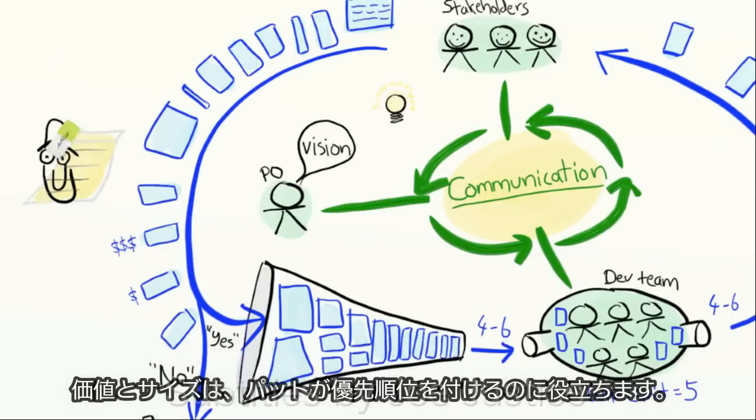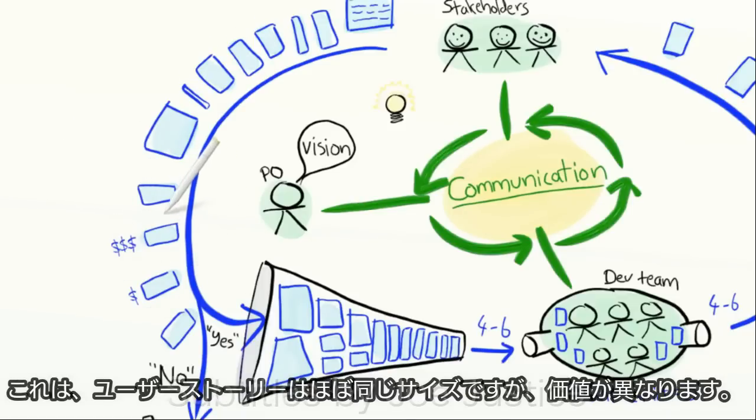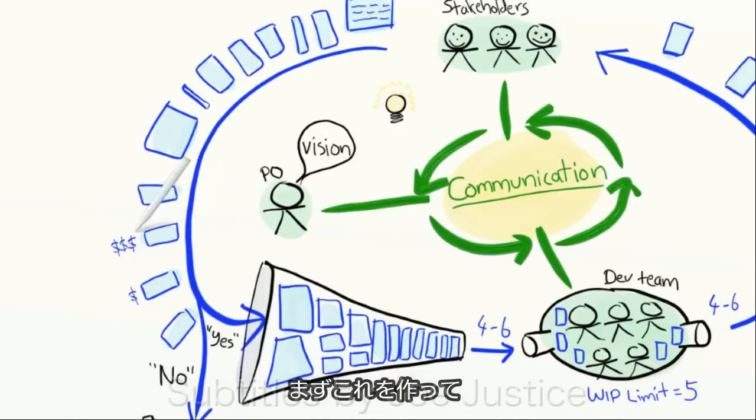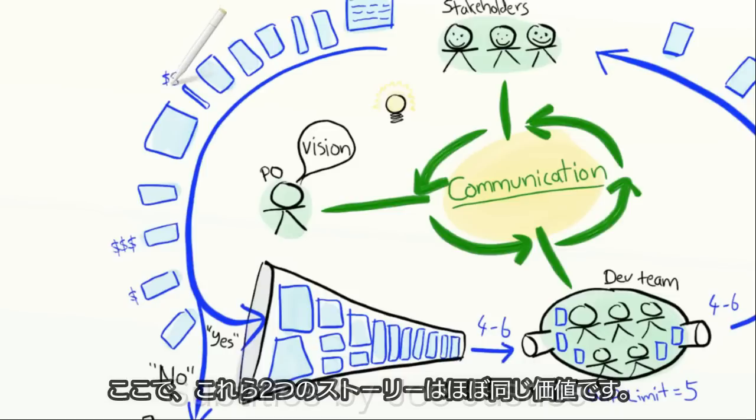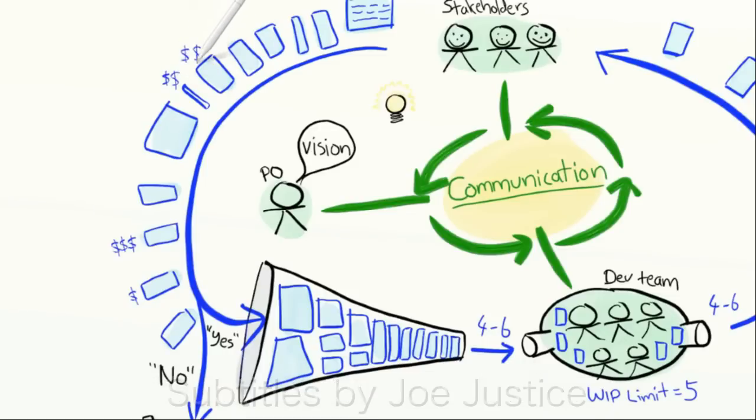Value and size is what helps Pat prioritize intelligently. Like here, these two stories are roughly the same size but have different value, so build this one first. And over here, these two stories have roughly the same value but different size, so build this one first. And so on.